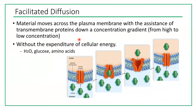Facilitated diffusion is also an example of passive transport. Substances still move down their concentration gradient from high concentration to low concentration. No ATP is needed. The difference is that these substances cannot directly move through the phospholipid bilayer, so they need special proteins — either a channel protein or a carrier protein. Proteins act like doors in a house that allow people to move through.